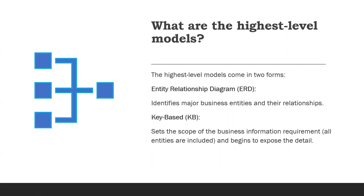What are the highest-level models? The highest-level models come in two forms: the Entity Relationship Diagram (ERD) and Key Based (KB). The ERD identifies major business entities and their relationships, while the Key Based model sets the scope of the business information requirement and begins to expose the detail.